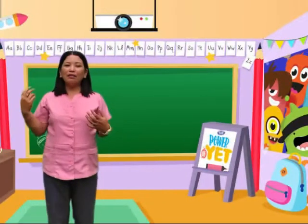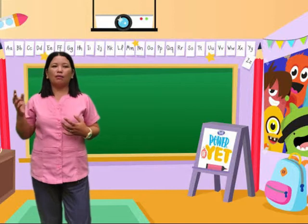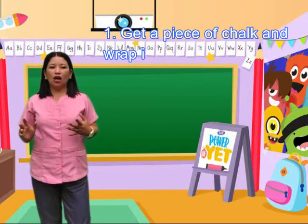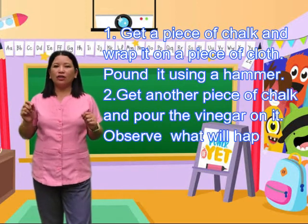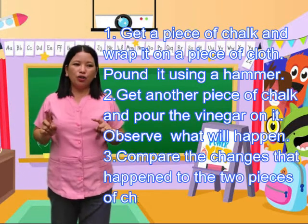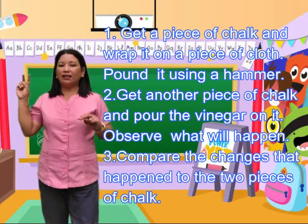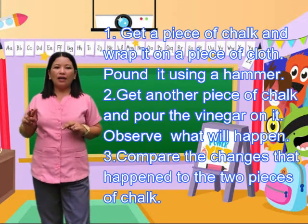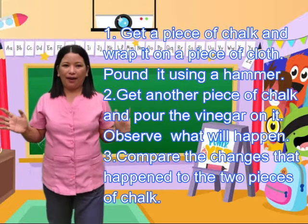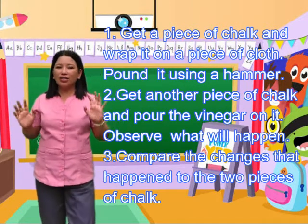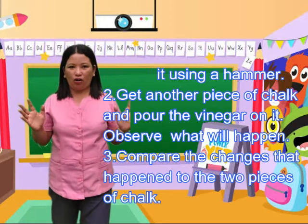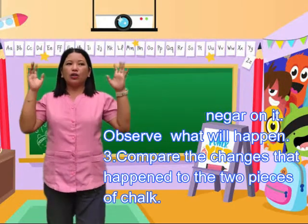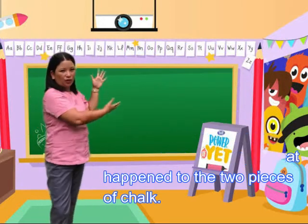The procedures you are going to follow are: Number 1, get a piece of chalk and wrap it in a piece of cloth, then pound it using a hammer. Number 2, get another piece of chalk and pour the vinegar on it. Observe what will happen. Compare the changes that happen in the two pieces of chalk, then answer the different guide questions.